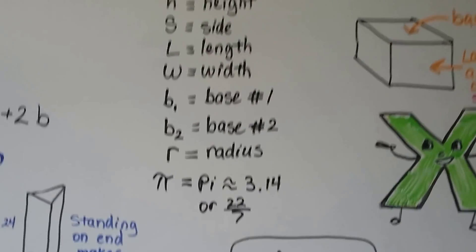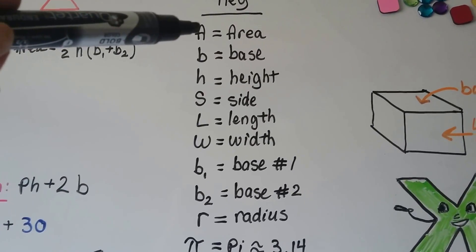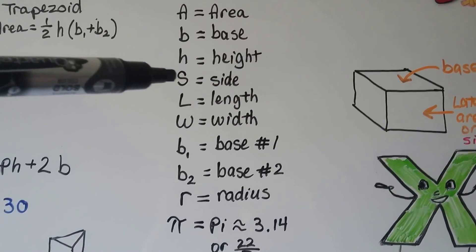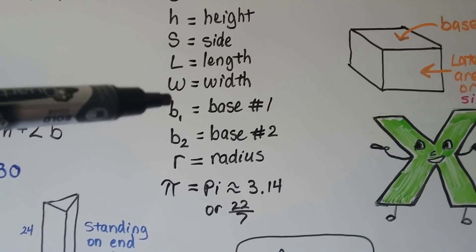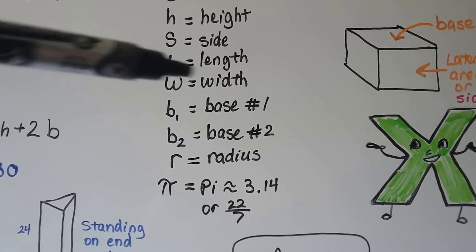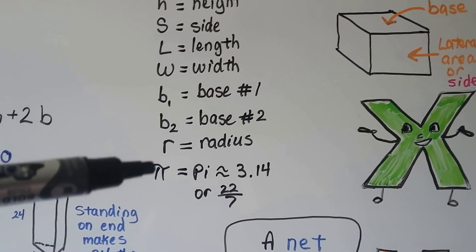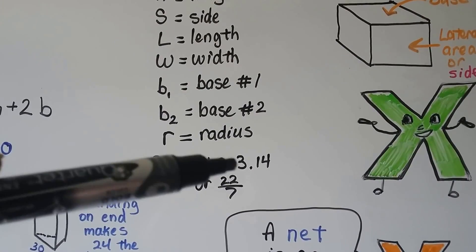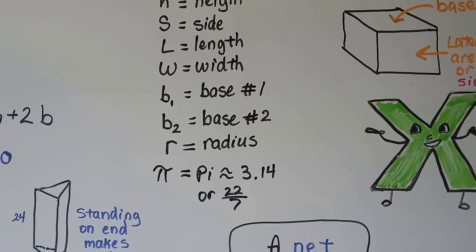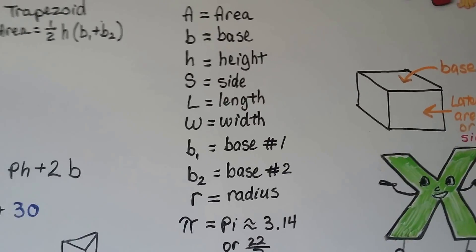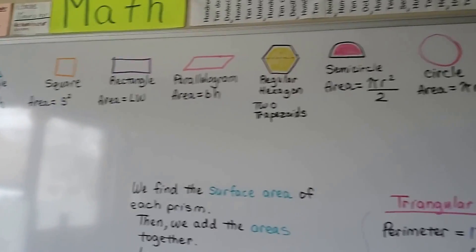Here are the keys to what the formulas mean: A is area, B is base, H is height, S is side, L is length, W is width. When you see a B with a small subscript number, that's B sub 1 for the first base and B sub 2 for the second base. R is radius. Pi is approximately 3.14, or as a fraction approximately 22 sevenths. You can use these formulas to help you find surface area.